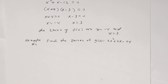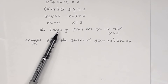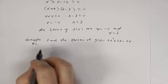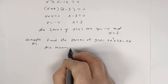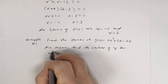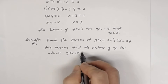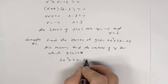Now let's look at example two. Find the zeros of g of x, which is two x squared plus two x minus 24. Just like before, this means find the values of x for which g of x is equal to zero. So set this function equal to zero: two x squared plus two x minus 24 equals zero.